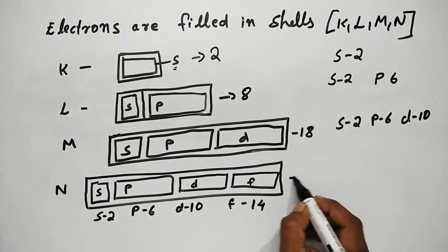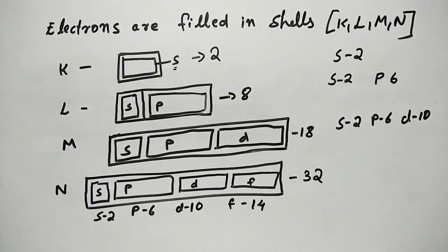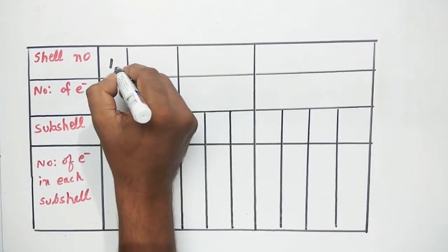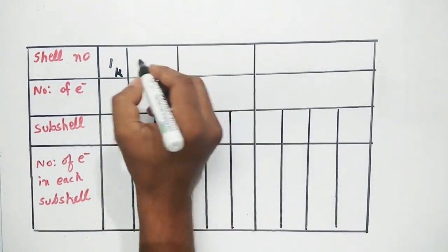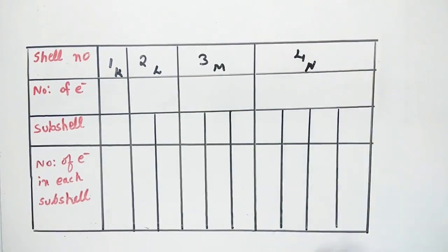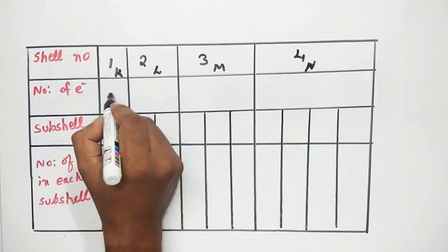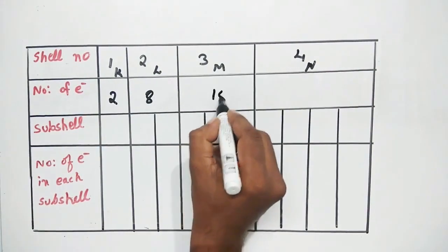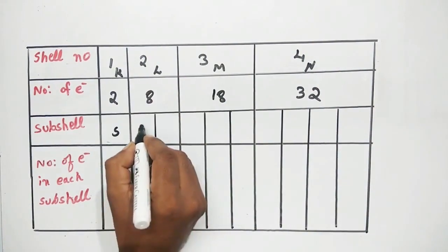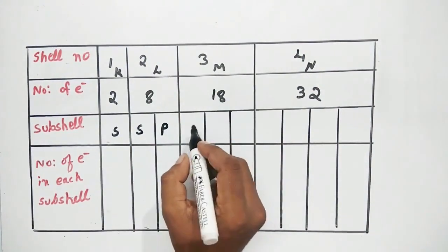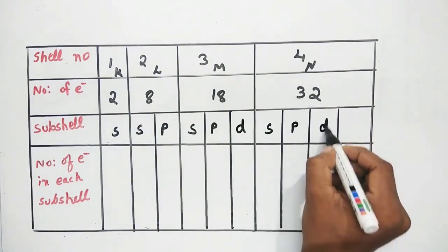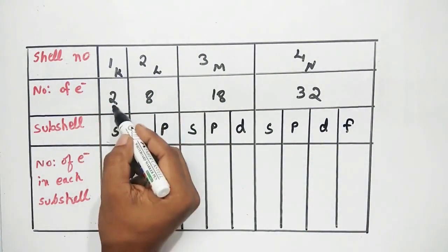So N shell holds 32 electrons. The shell numbers are 1, 2, 3, 4 corresponding to K, L, M, N. The subshell distribution is: K has S; L has S and P; M has S, P, and D; N has S, P, D, and F.